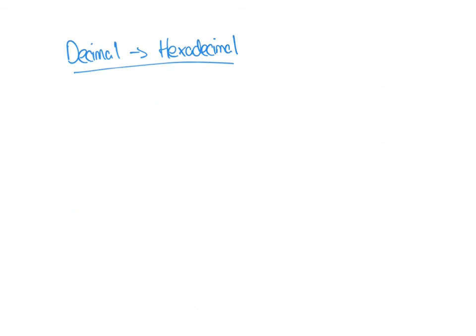Converting a decimal number to hexadecimal is slightly more complicated. It involves dividing our number by 16 repeatedly, each time taking the remainder. In our previous video on octal numbers we covered different methods for finding remainders, so if you're unsure it's worth going back to watch that video before continuing.